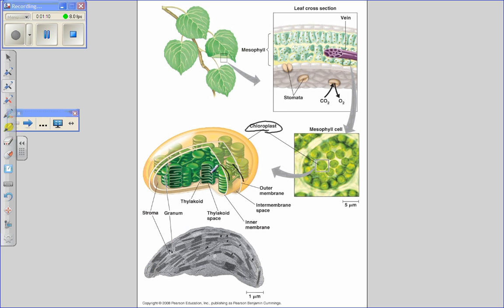Within the chloroplast we have stacks of thylakoids. Thylakoids are little sac-like packets that have in their membrane all of the proteins that are required for the light reactions in photosynthesis.